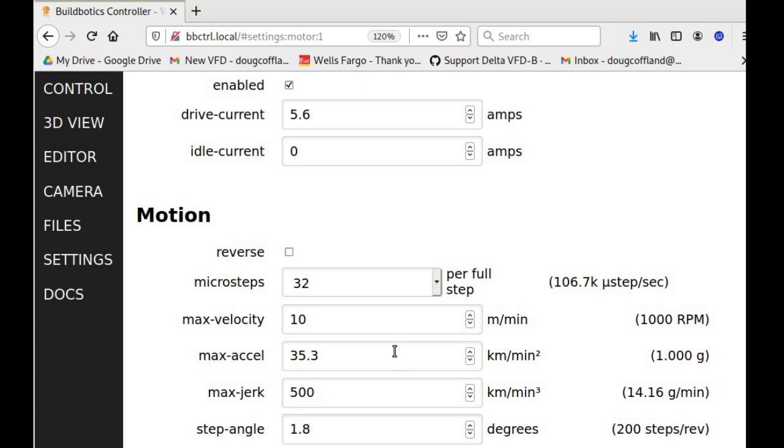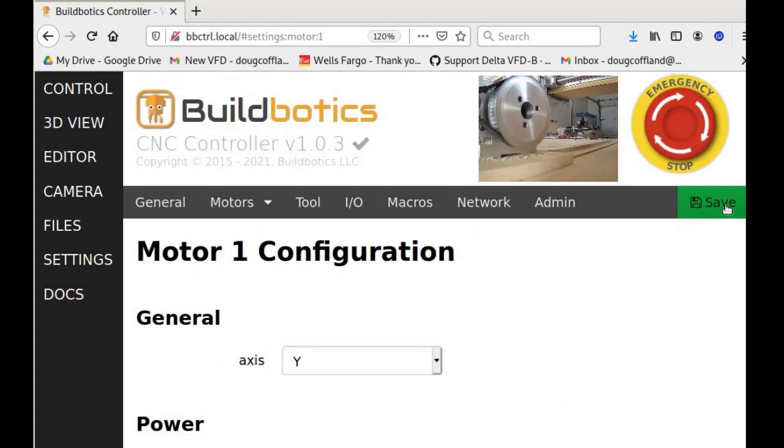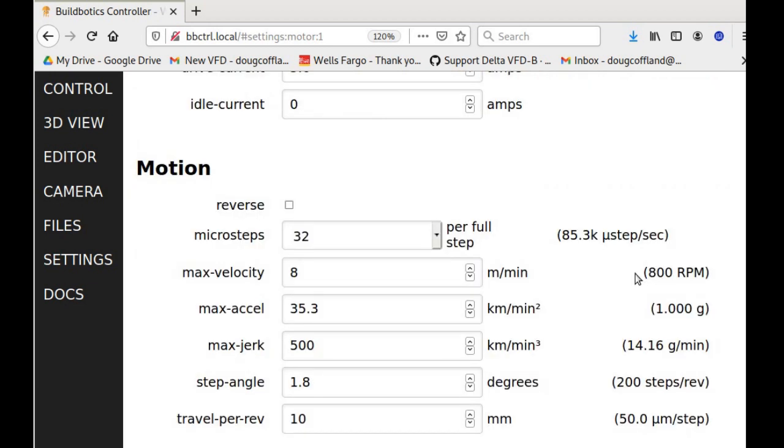Since I definitely don't want the motor to stall when running a job, I will reduce the max velocity to 80% of the value I found through testing. 80% of 10 is 8, so I set the y-axis max velocity to 8 meters per minute. Repeat these steps for setting acceleration, jerk, and velocity for each axis.